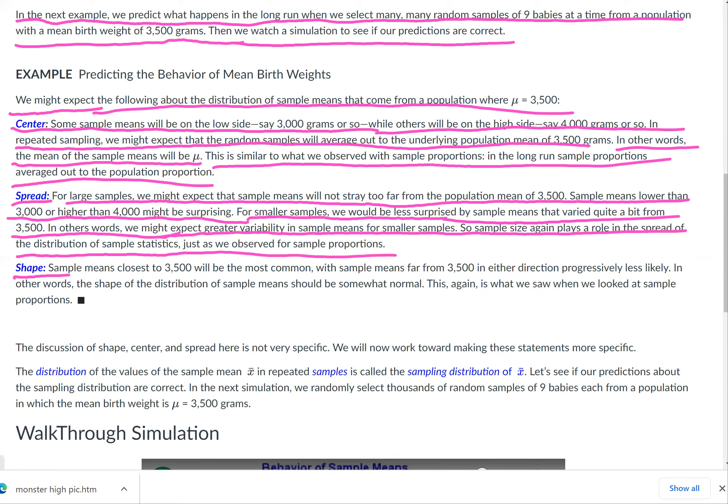The shape: sample means closest to 3,500 will be the most common, with sample means far from 3,500 in either direction progressively less likely. In other words, the shape of the distribution of sample means should be somewhat normal. This again is what we saw when we looked at sample proportions.